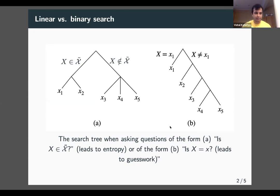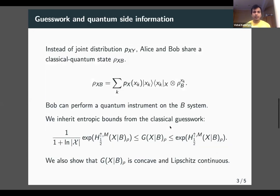It's related to entropy. The entropy comes from average number of guesses in binary search tree. In guesswork, you're only allowed equality questions, like linear search. Therefore, guesswork is always greater than entropy. We provide a framework for analyzing guesswork with quantum side information, encompassing no side information, classical side information, and quantum side information, where Bob has a quantum system correlated to Alice's and uses measurements to minimize guesses.